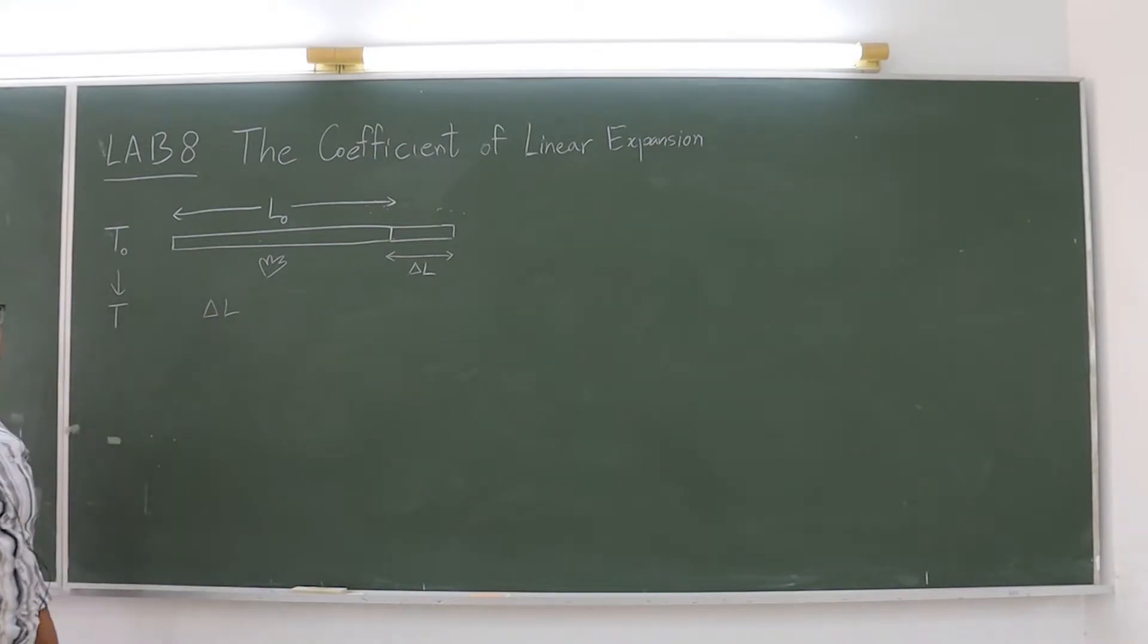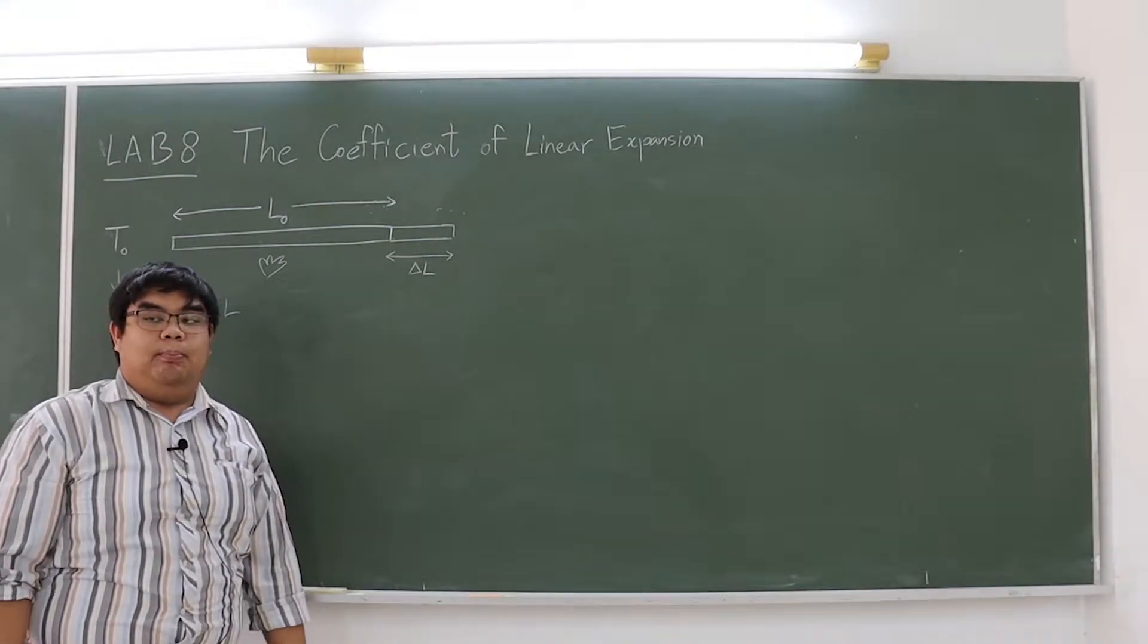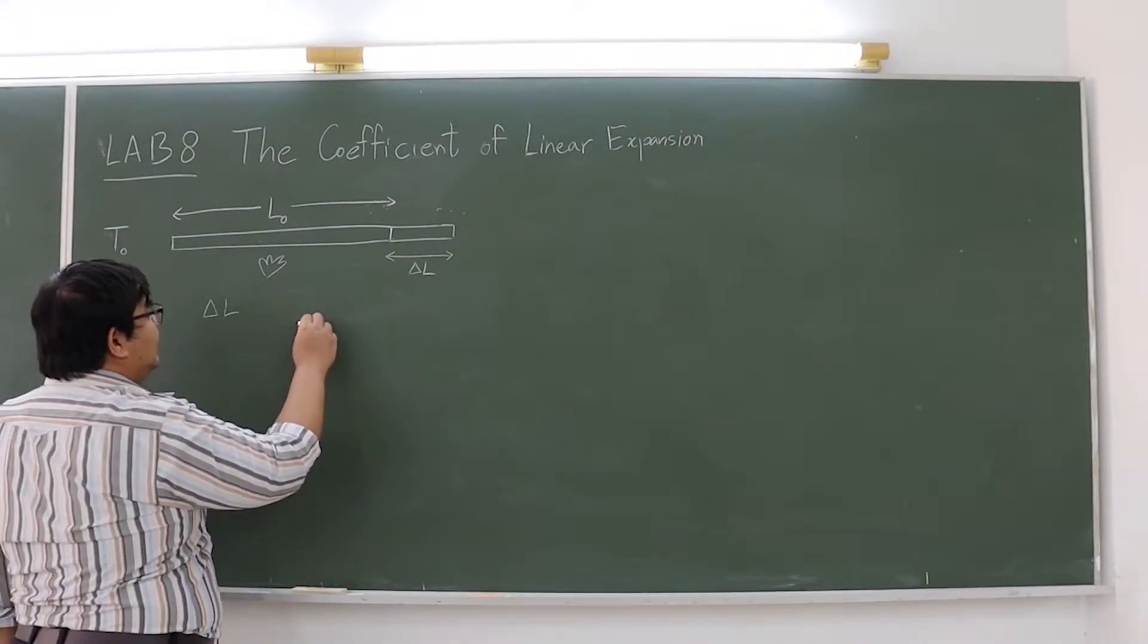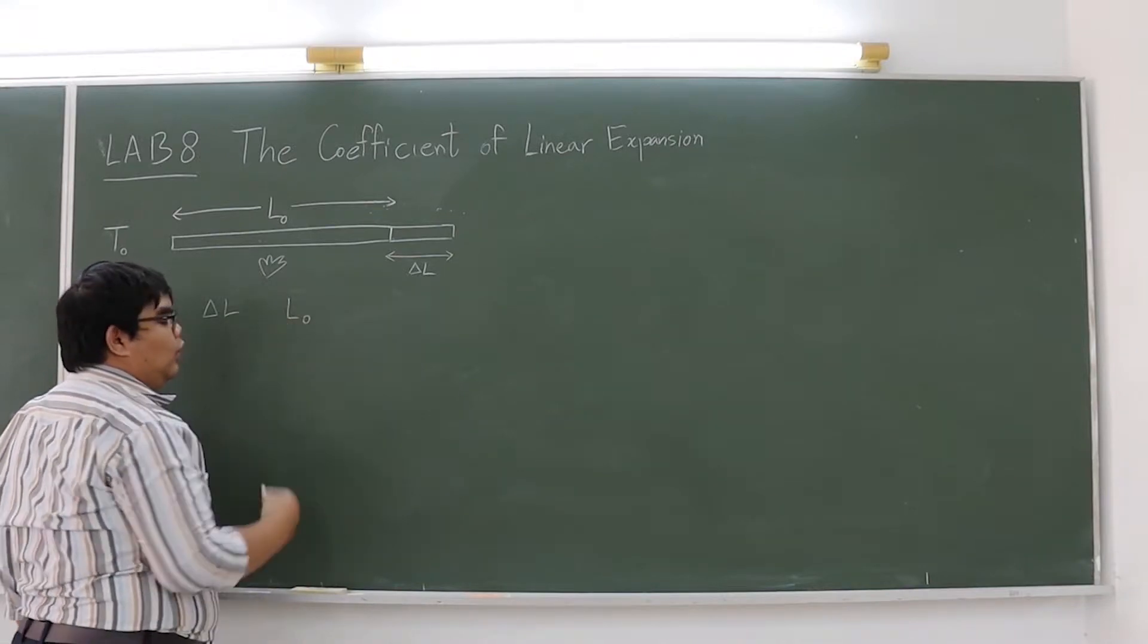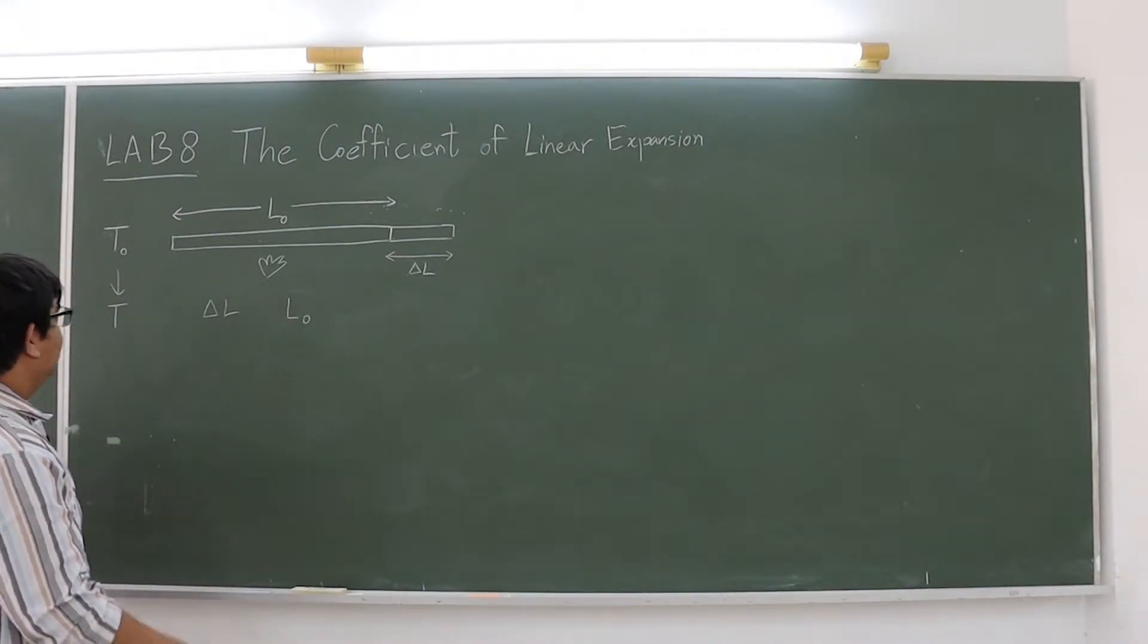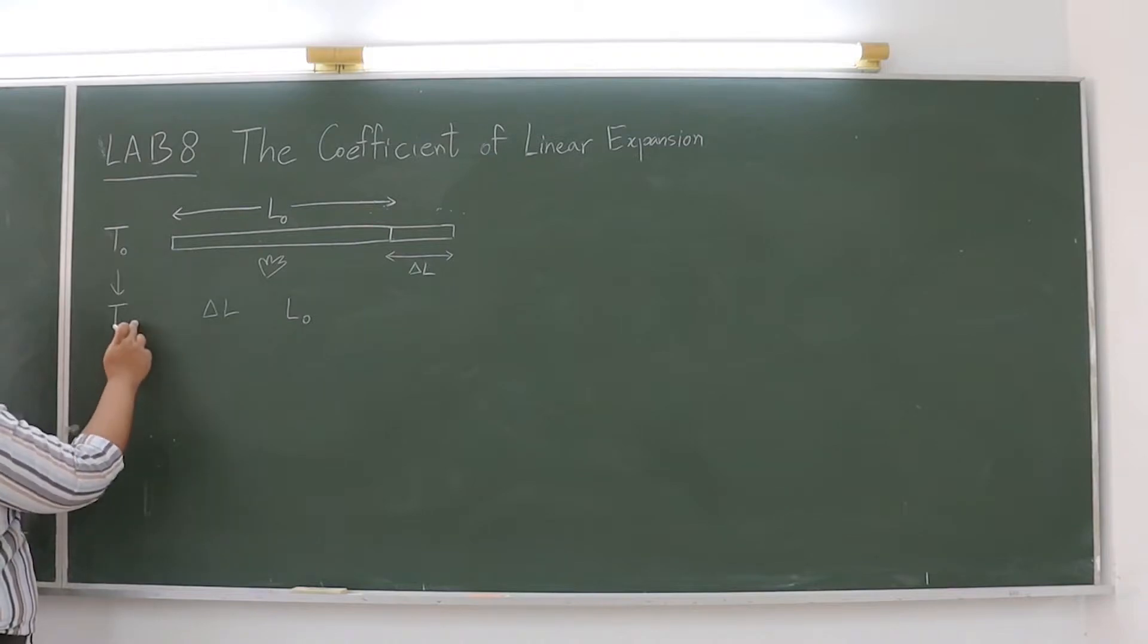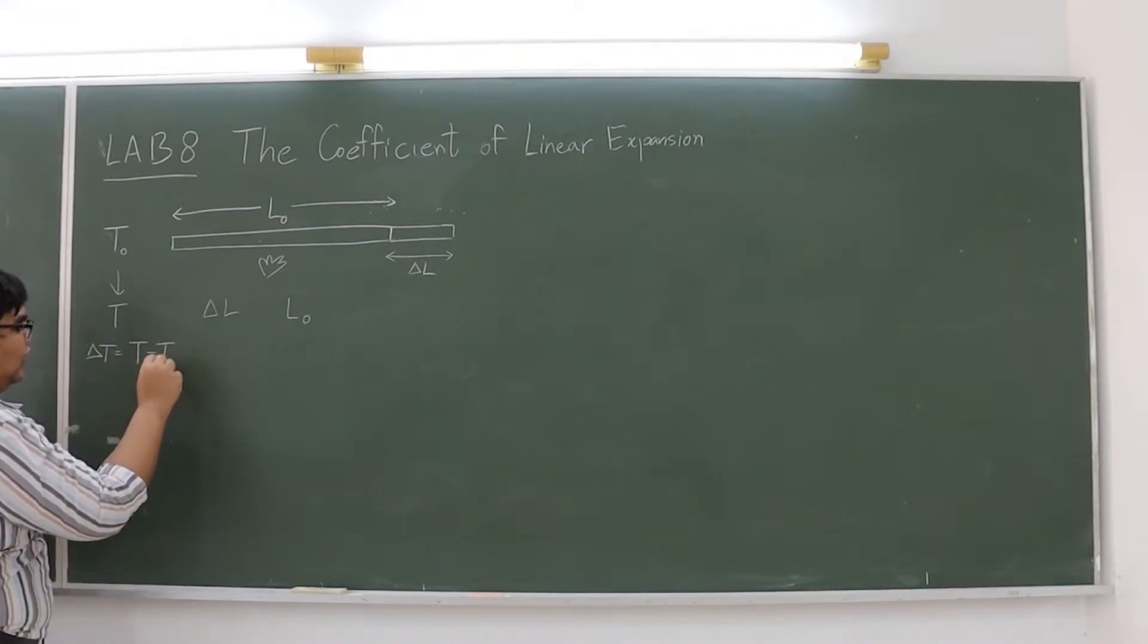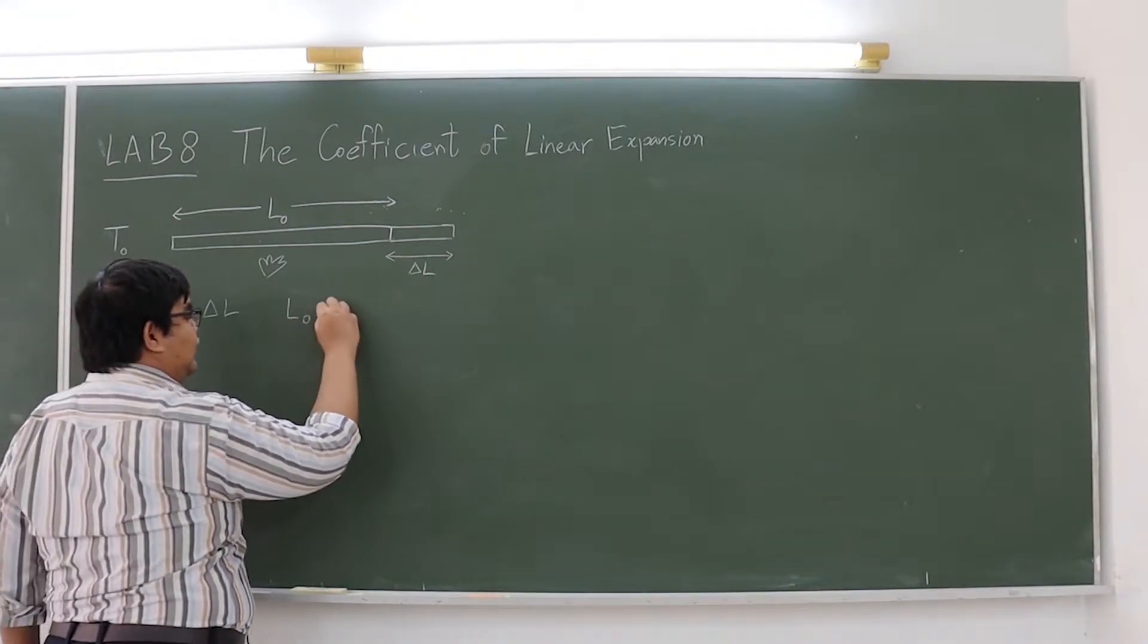The first one is the initial length L0, and the second one is the temperature difference delta T, which is equal to T minus T0.